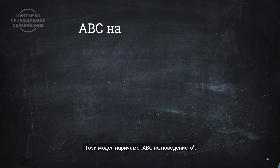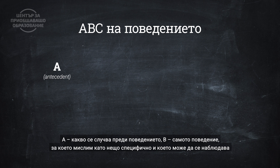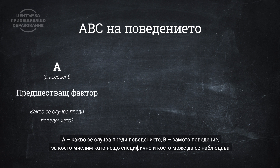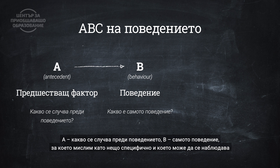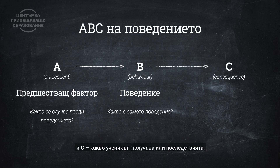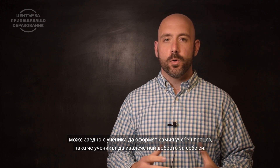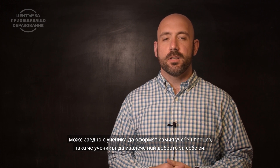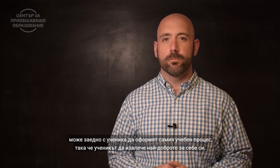We call these the ABCs of behavior. The A is what happens before the behavior, the behavior itself — and we talk about it as being specific and observable — and then what the student gets, or the consequence. If teachers know what it means when they see this type of situation in their classroom, they can put together learning so that students can make the most of school.